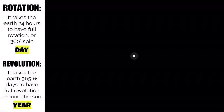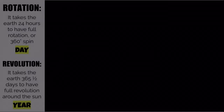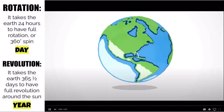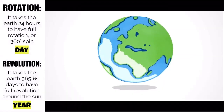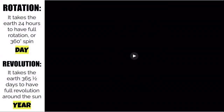Let's talk about rotation and revolution. A rotation takes the Earth 24 hours for a full 360-degree spin. A revolution takes 365 and a quarter days to complete a full revolution around the sun. A rotation causes a day; a revolution causes a year. This is what brings about the different season changes.